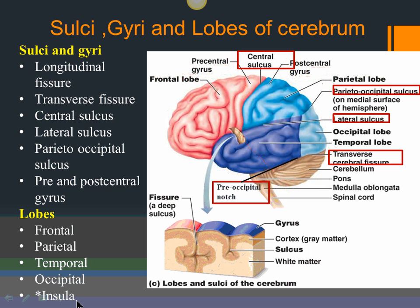There is another lobe called the insula. Normally we talk mainly of the four main lobes. The insula is a deep lobe buried inside — if you lifted the parietal and frontal lobes up and pulled the temporal lobe aside, you would see the insula deep inside.